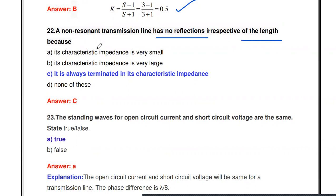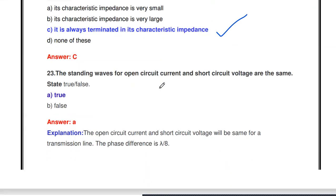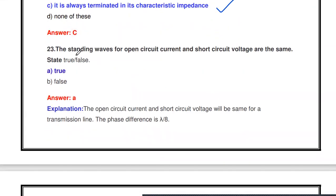A non-resonant transmission line has no reflection irrespective of its length because — it is always terminated in its characteristic impedance. When the line is terminated in its characteristic impedance, there are no reflections.